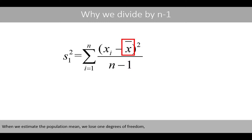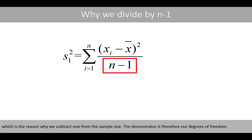When we estimate the population mean, we lose 1 degree of freedom, which is the reason why we subtract 1 from the sample size. The denominator is therefore our degrees of freedom.